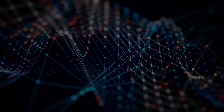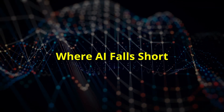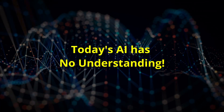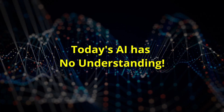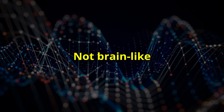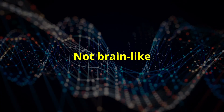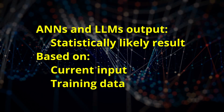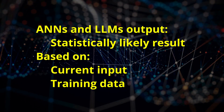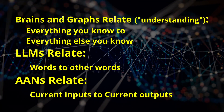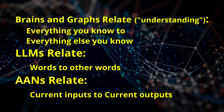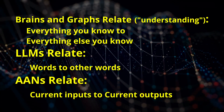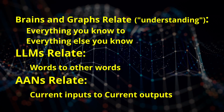Neural networks and large language models are impressive, but they have a fundamental problem. They don't actually understand anything. Despite media hype, these systems aren't truly brain-like. You can think of them as advanced statistical models that predict the most probable response to an input based on training data. The more data, the more intelligent they seem, but they still lack true comprehension. That's where the Enhanced Knowledge Graph comes in.